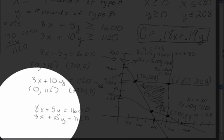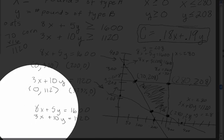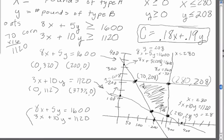So basically, I would use the addition method on this one. So I'm going to multiply the top equation by negative 2. That's going to give me negative 16x plus negative 10y equals negative 3,200.